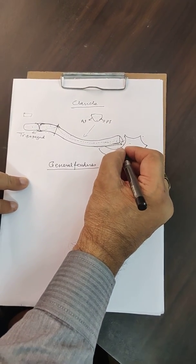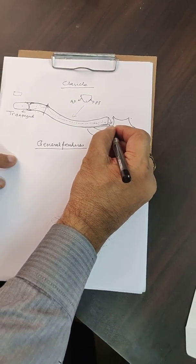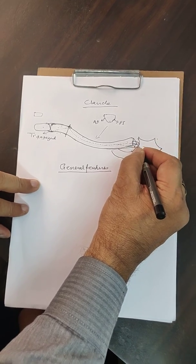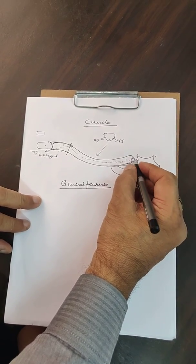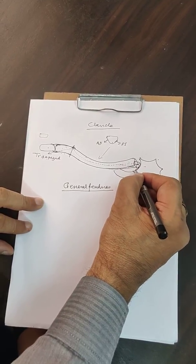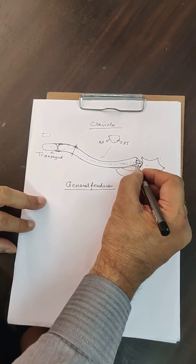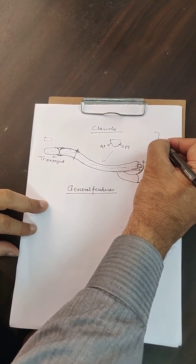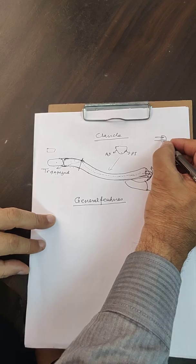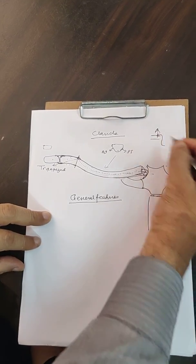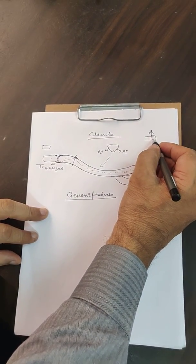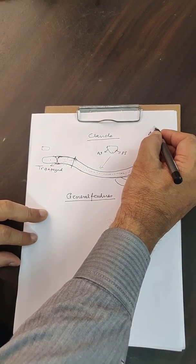The sternoclavicular joint is much more complex. First, it has got a meniscus, and this meniscus is an S-shaped structure which connects the superior surface of the clavicle to the inferior part of the sternoclavicular joint. Since it is shaped this way, it prevents the clavicle from going upwards. So only if the meniscus is torn can there be a sternoclavicular dislocation.